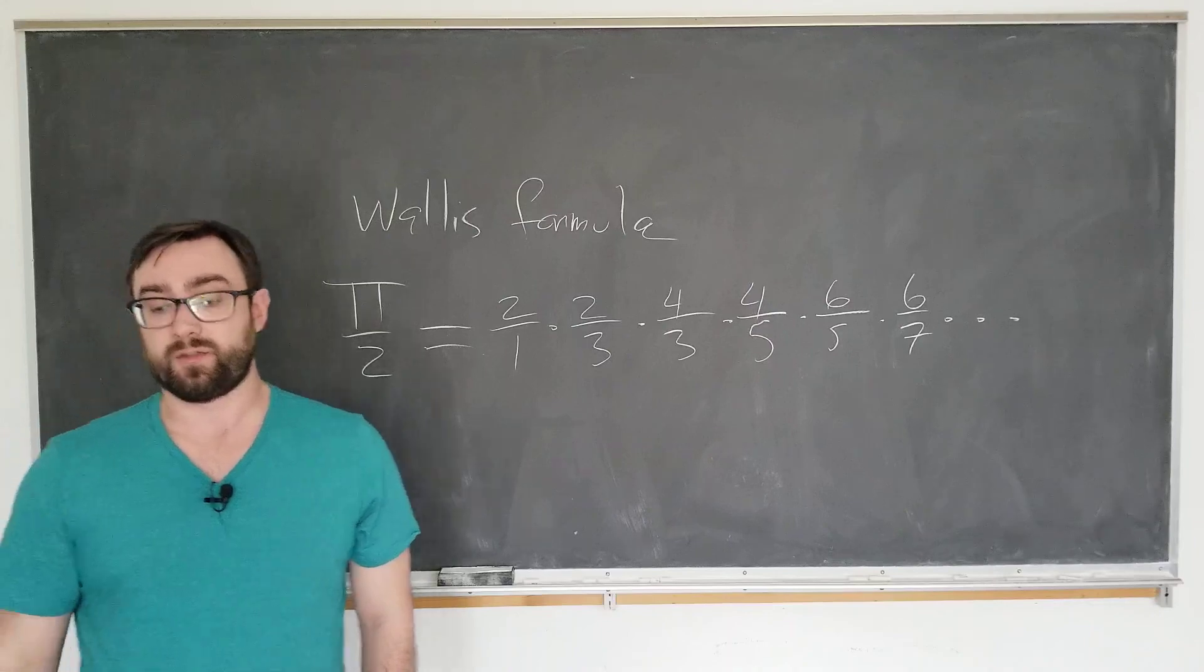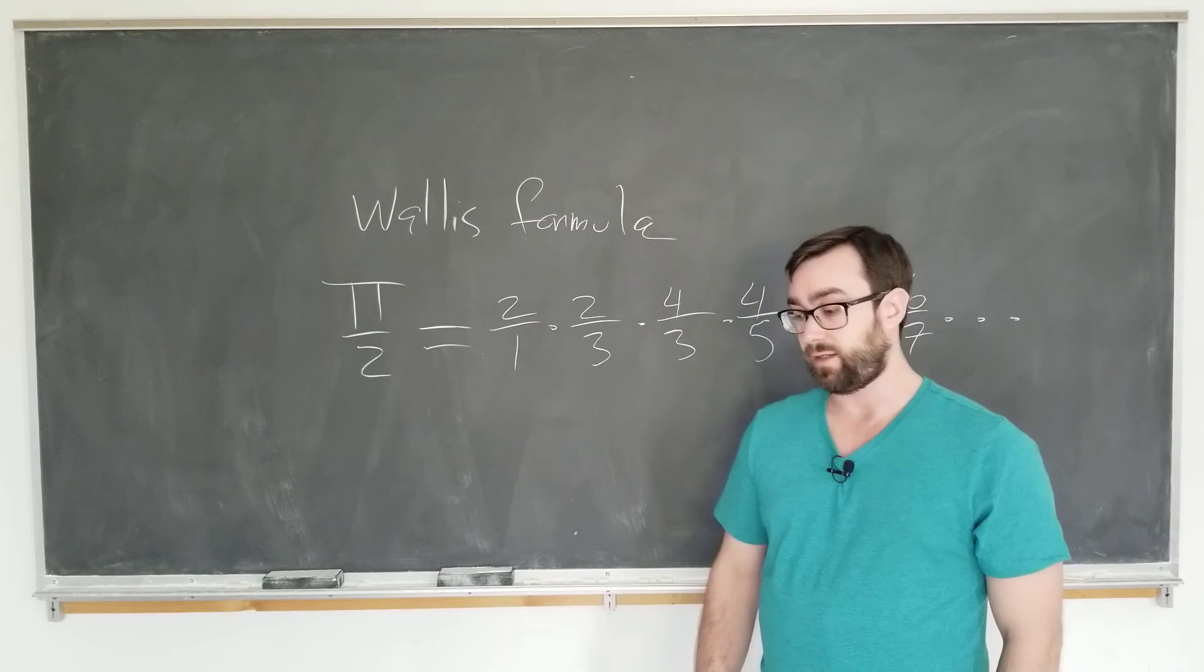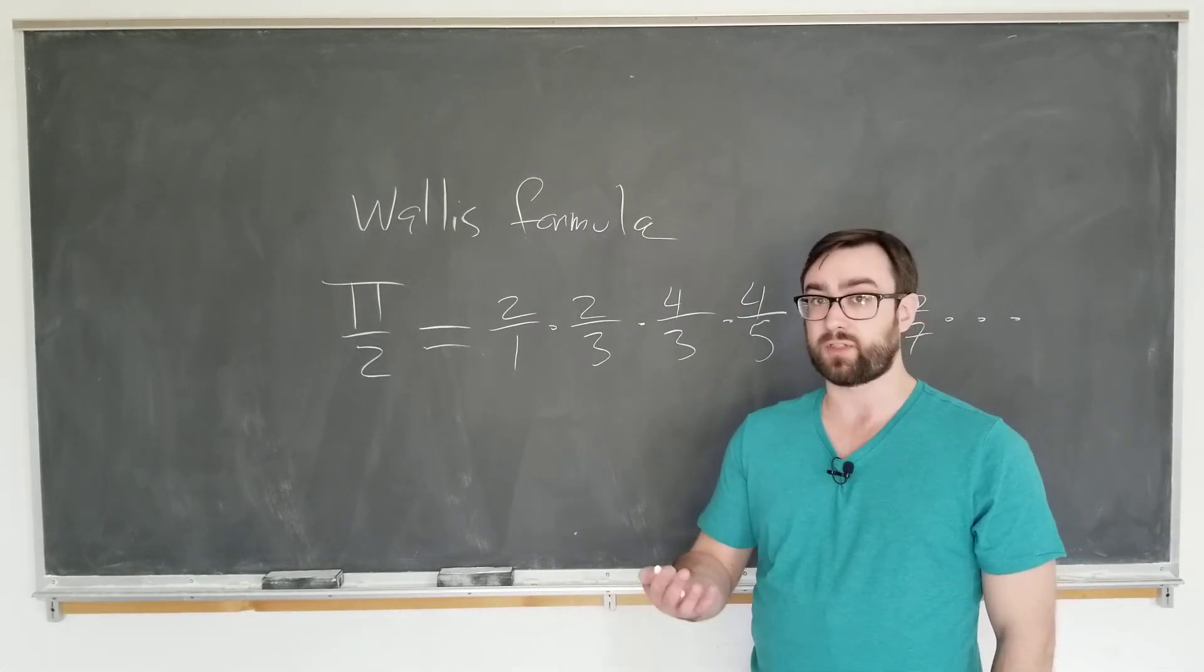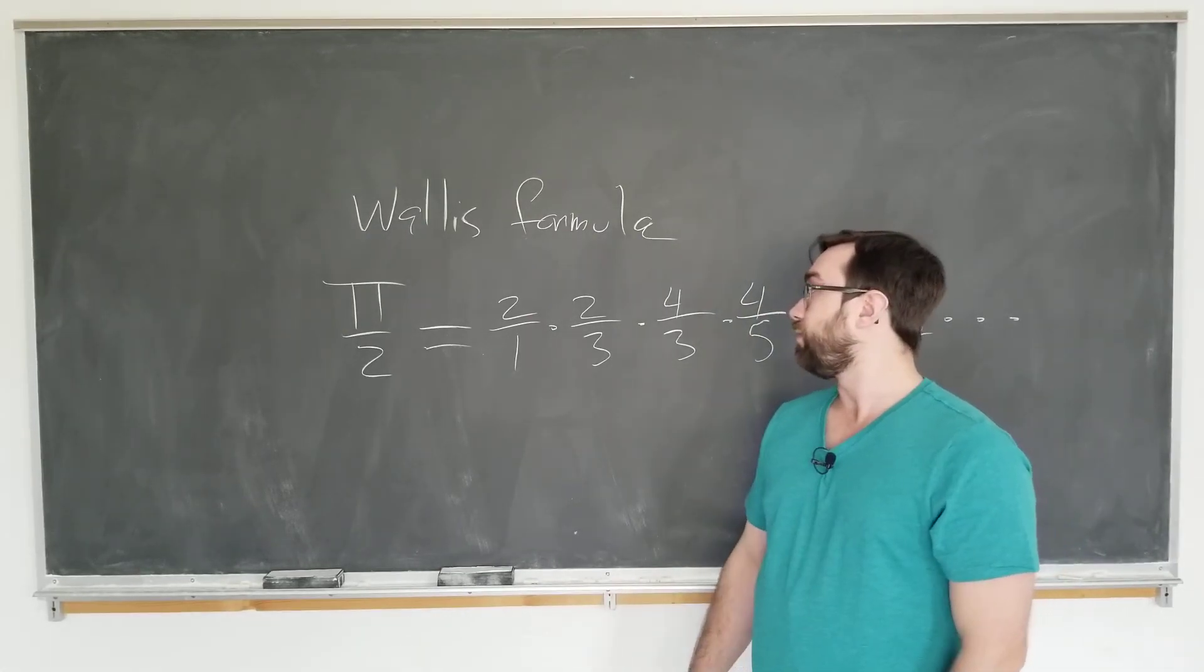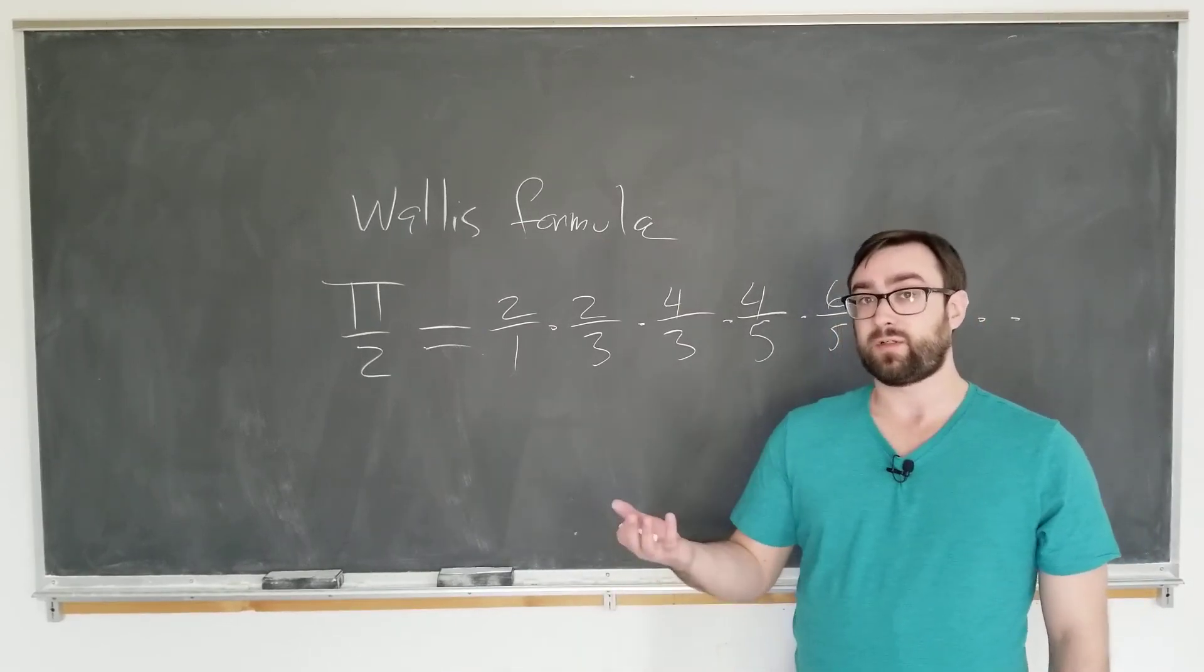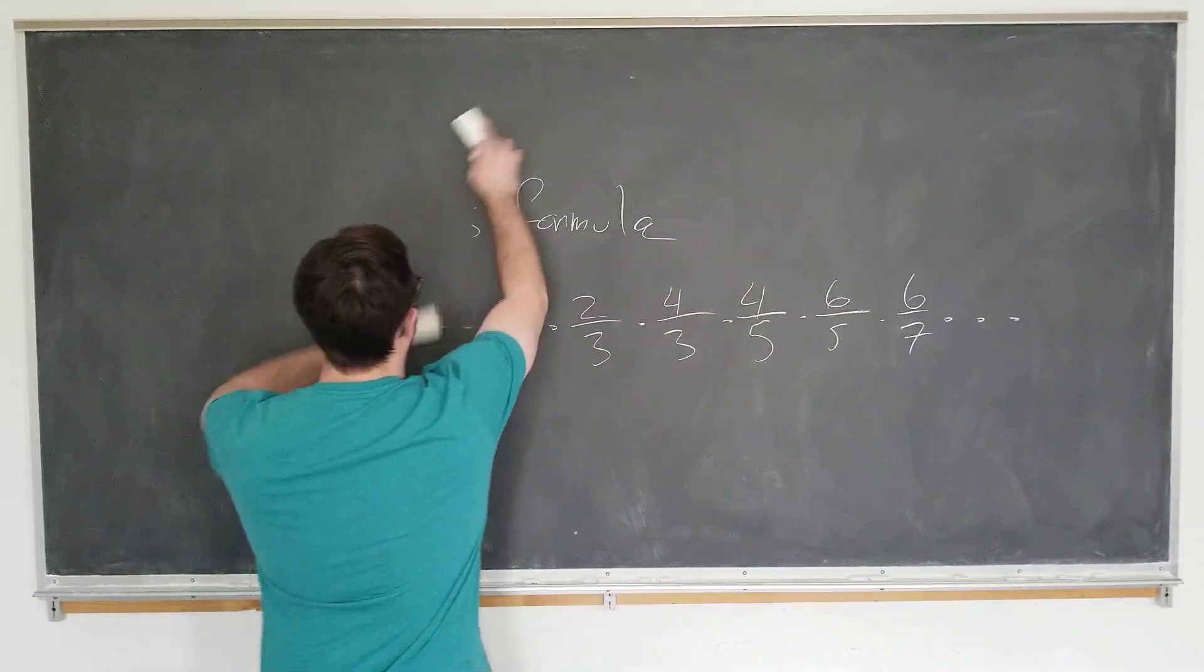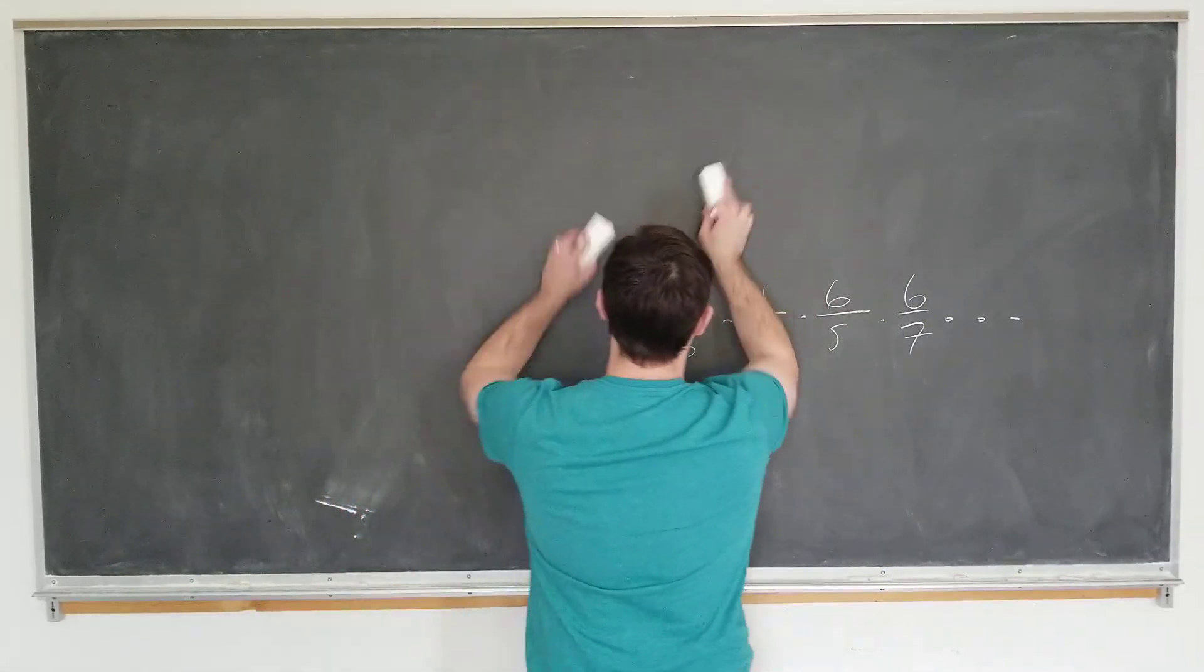We are going to use a method from Euler. We are going to use the Euler infinite product sine function. And we're also going to use the original formulation of this, or at least something close to it, because of Wallace himself. All right, let's get started with Euler's sine representation.